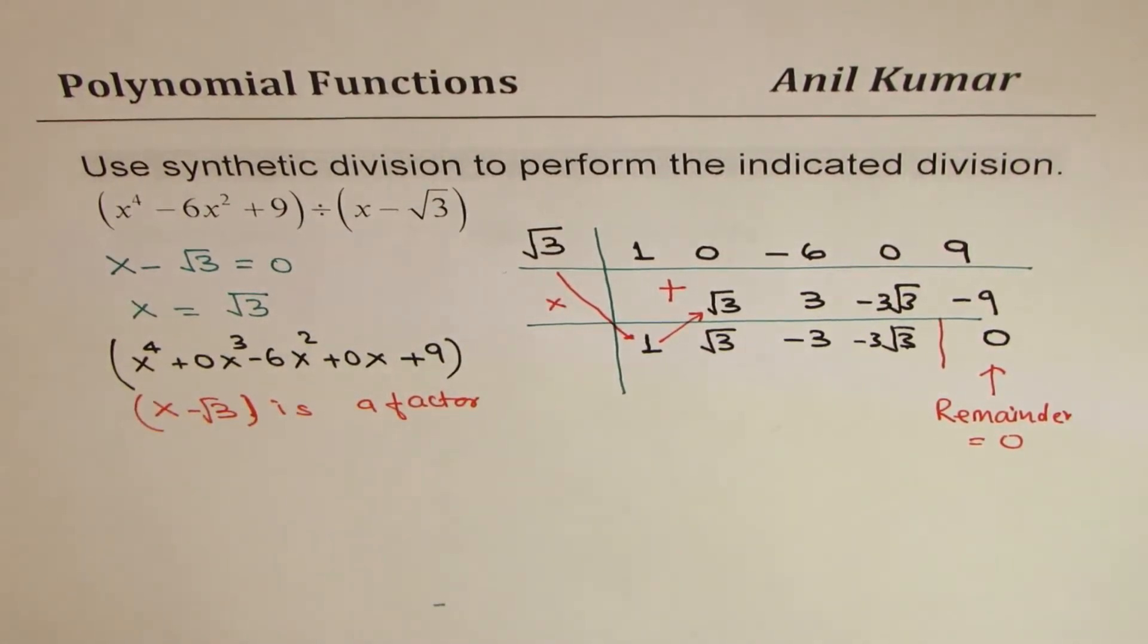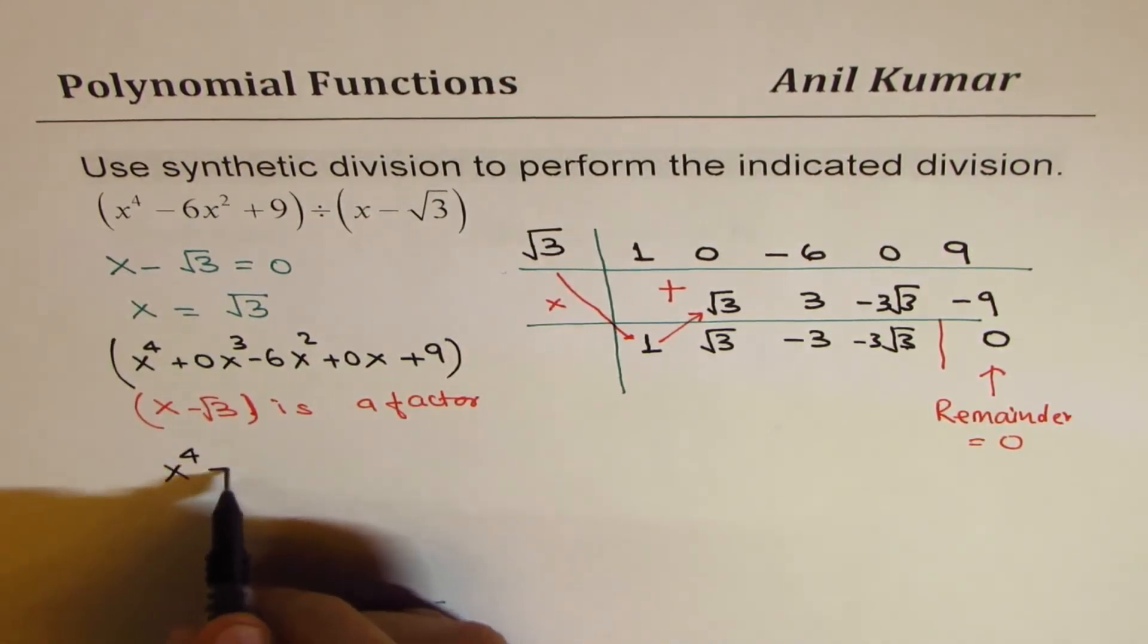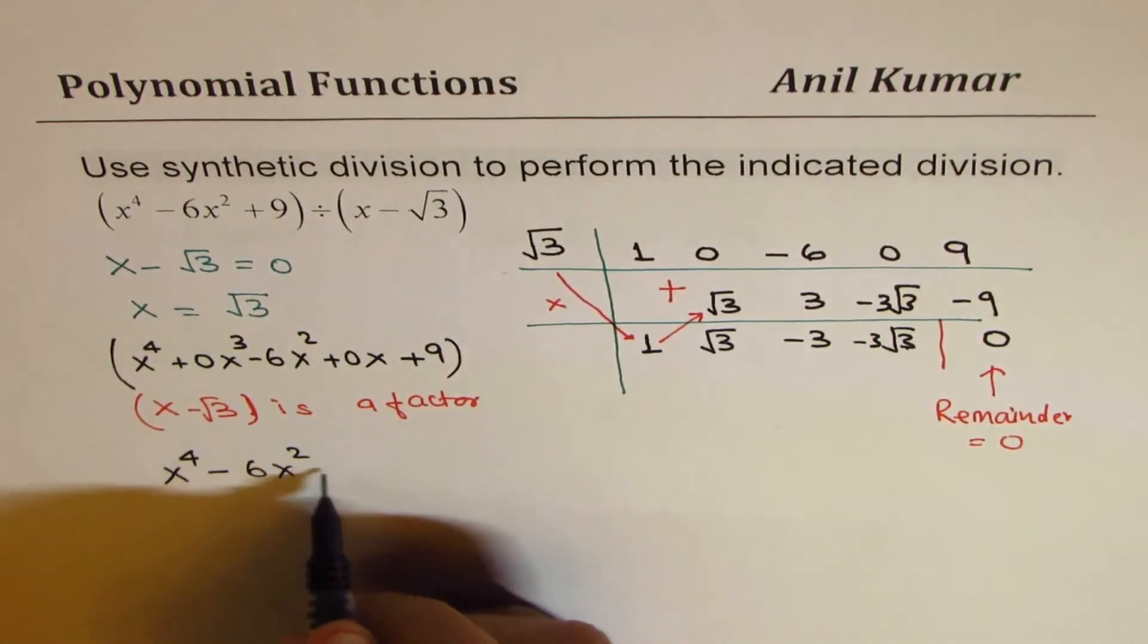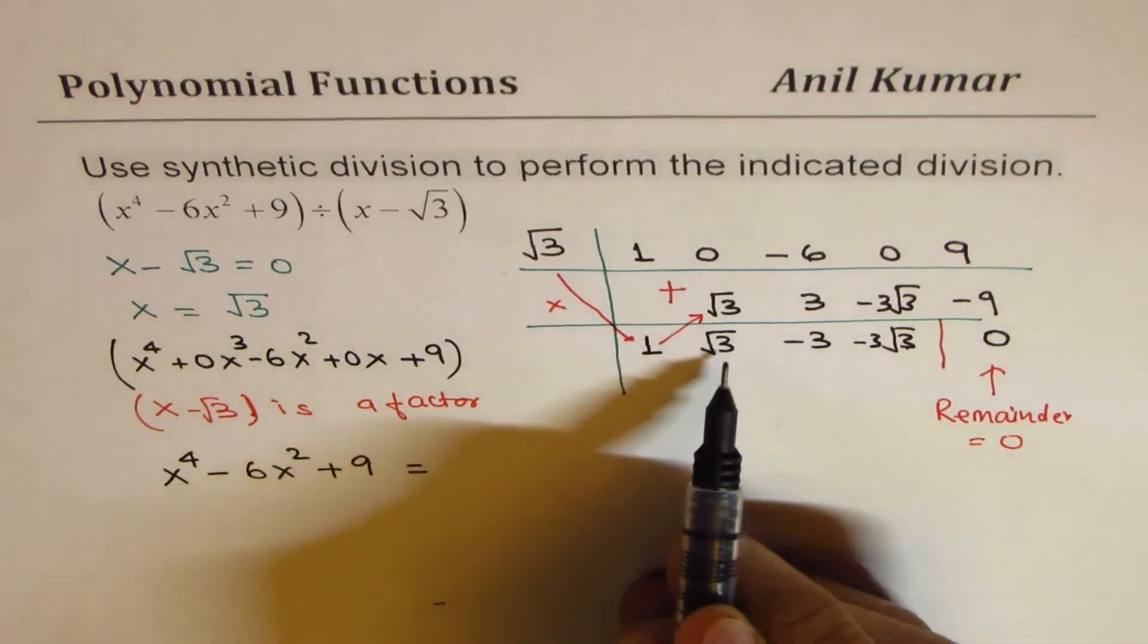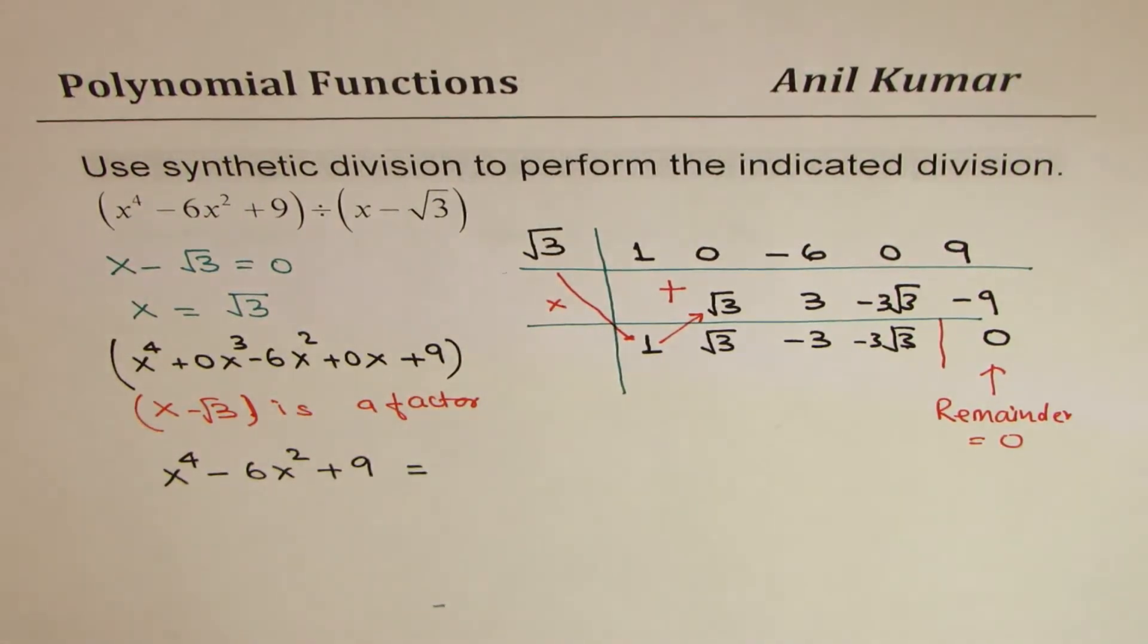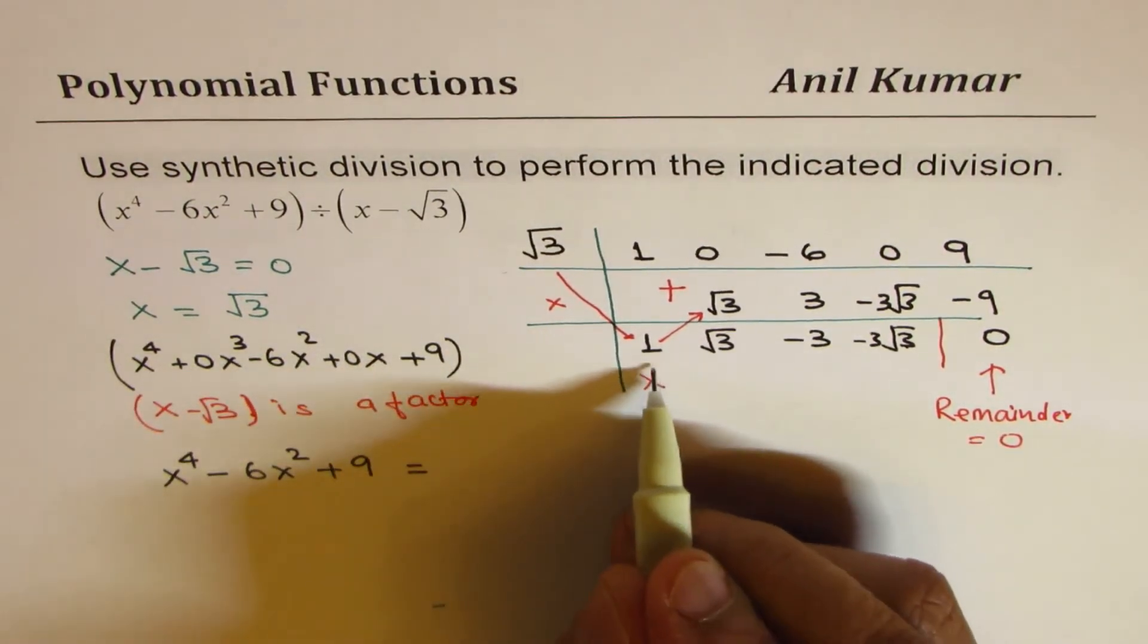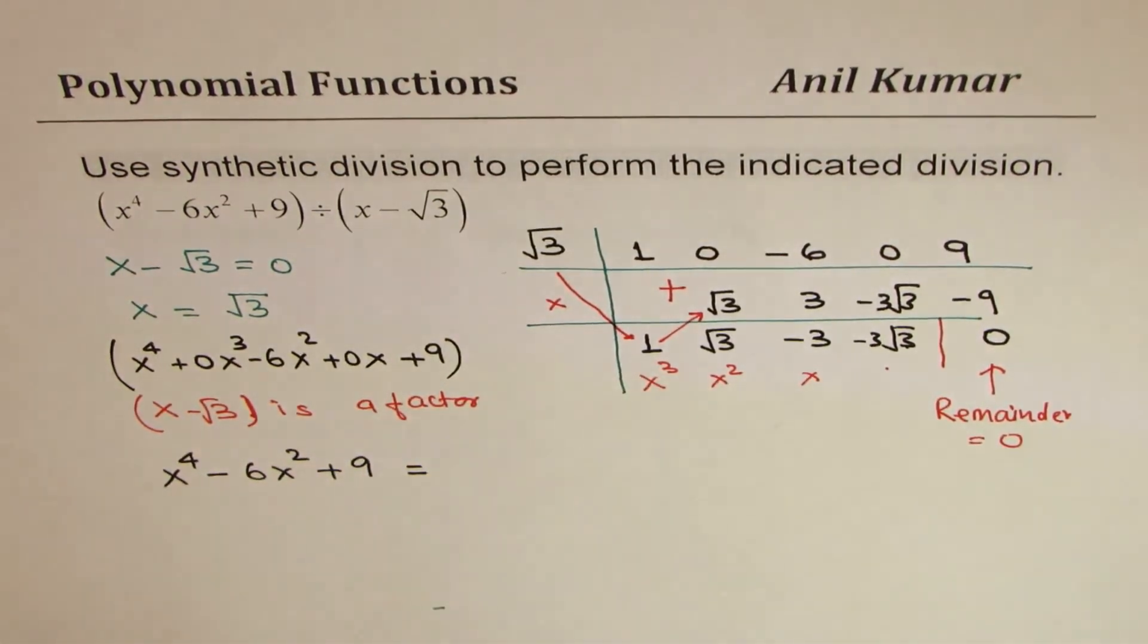Now we can write the division statement saying that x to the power of 4 minus 6x square plus 9 is equal to, that becomes the quotient. And the degrees will be 1 lower. So here the degree will be x cube. Then it will be x square, that will be x, and that's a constant.